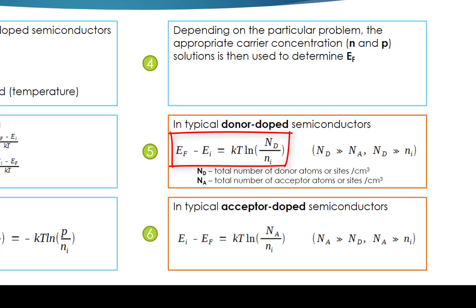Ni is intrinsic carrier concentration. In typical acceptor doped semiconductors, Na is far greater than Nd, Na is also far greater than Ni. Thus, we get EI minus EF equals KT times ln(Na over Ni).